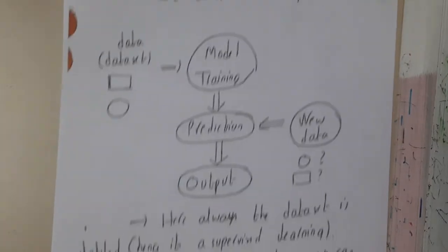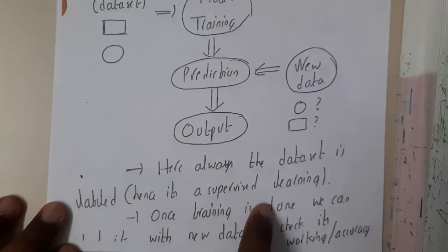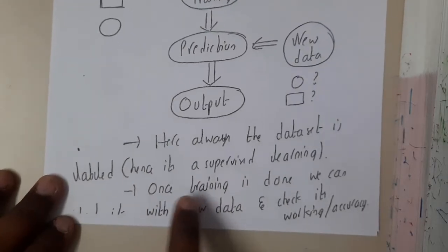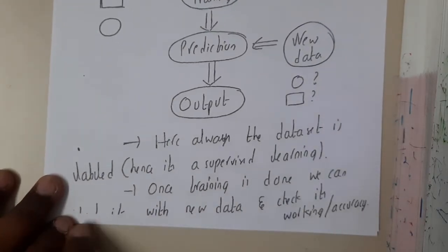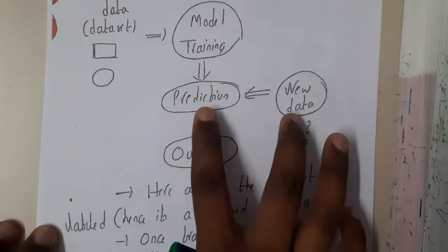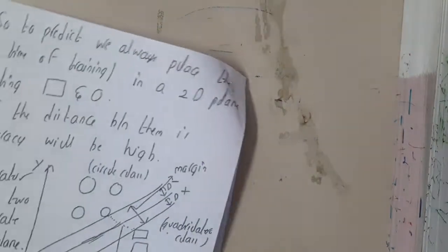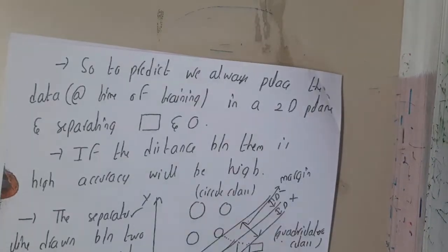Here, always the data set which is input is supervised learning data. Only after training is done, we can test it with new data. So basically, here training is done and here testing is done, in simple words. Whether it is working accurately or not, we can test there. So this is the back end, how it is going to work.